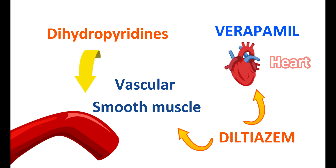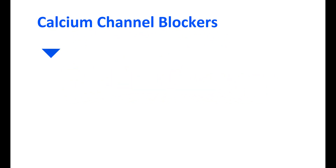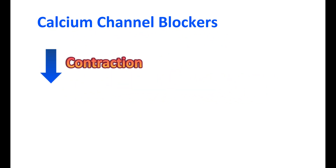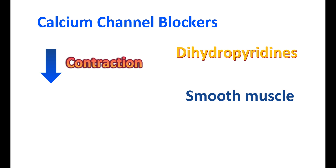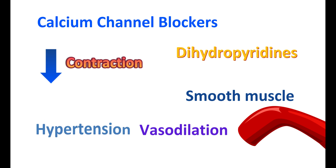The main role of calcium channel blockers is to reduce the contraction of either smooth muscle or cardiac muscle. Dihydropyridines are more selective towards smooth muscle, so they can reduce the contraction of vascular smooth muscle resulting in vasodilation. That is why dihydropyridines mainly show their effect on blood vessels, resulting in reduced blood pressure, and they are mainly indicated for the treatment of hypertension.